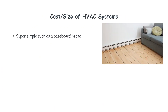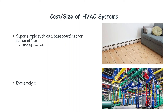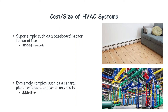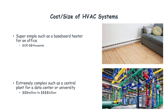HVAC systems can be very simple, such as a baseboard heater for an office. These simple systems can cost from a hundred dollars up to a few thousand dollars. But HVAC systems can also be extremely complex, such as a central plant for a data center or a university, and these complex systems can cost from a million dollars up to a billion dollars.